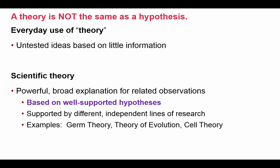A scientific theory is not an untested idea. By definition, a scientific theory is a broad explanation for an observation based on well-supported hypotheses — it has been tested and supported. When we talk about the germ theory, the theory of evolution, or the cell theory, these are not untested ideas; they have been tested and supported. So a theory and a hypothesis are not the same thing.